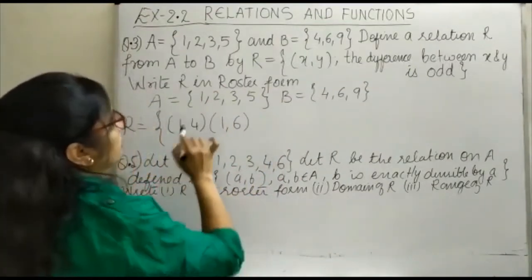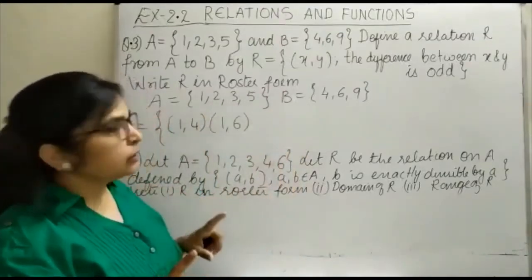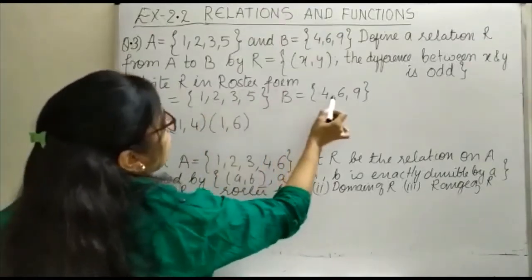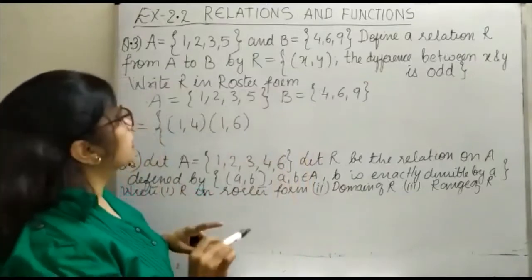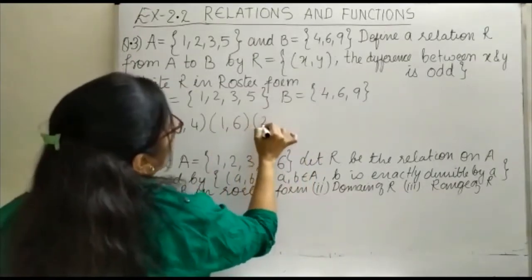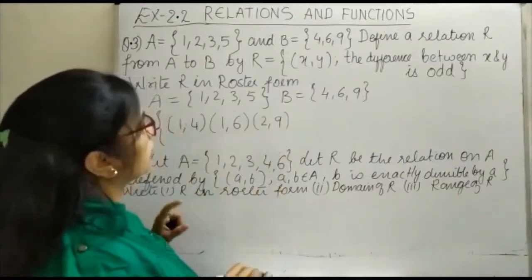Now come to the next element: (2,4) will not work, then (2,6) again will not work, then (2,9)—you can see that the difference of 2 and 9 is odd.